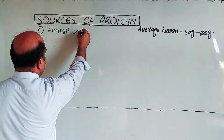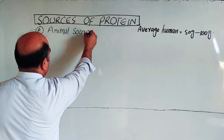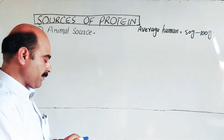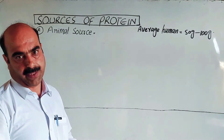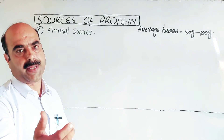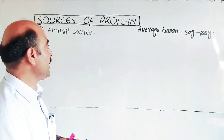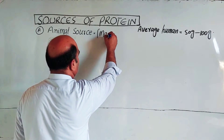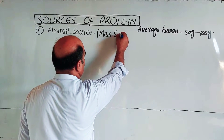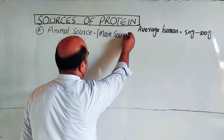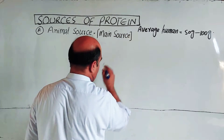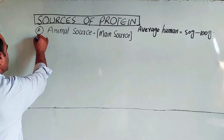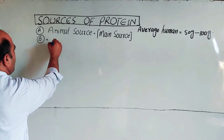From animal sources, proteins are obtained. The main animal sources provide proteins in good quantities. These are considered the main sources of protein from animals.